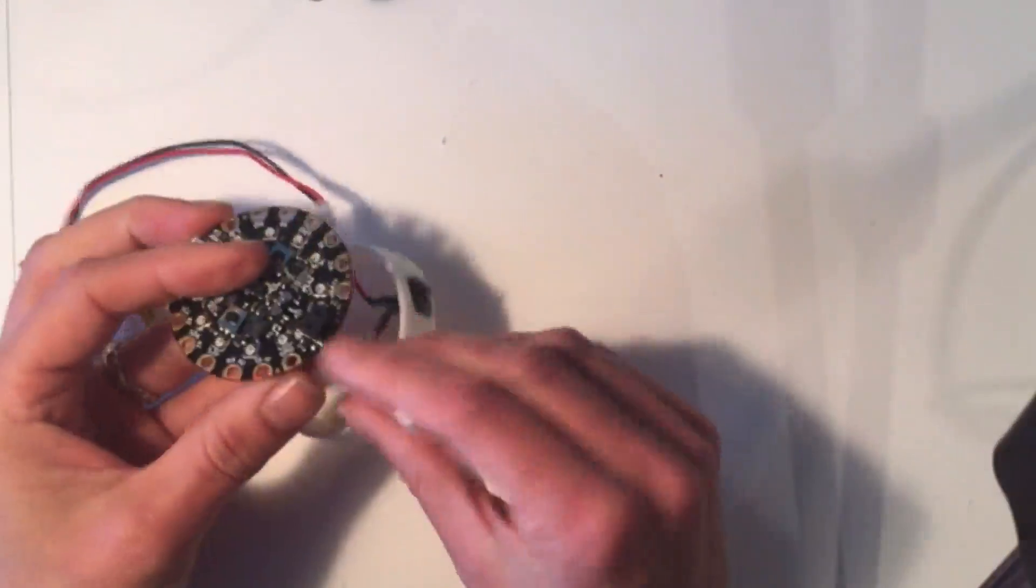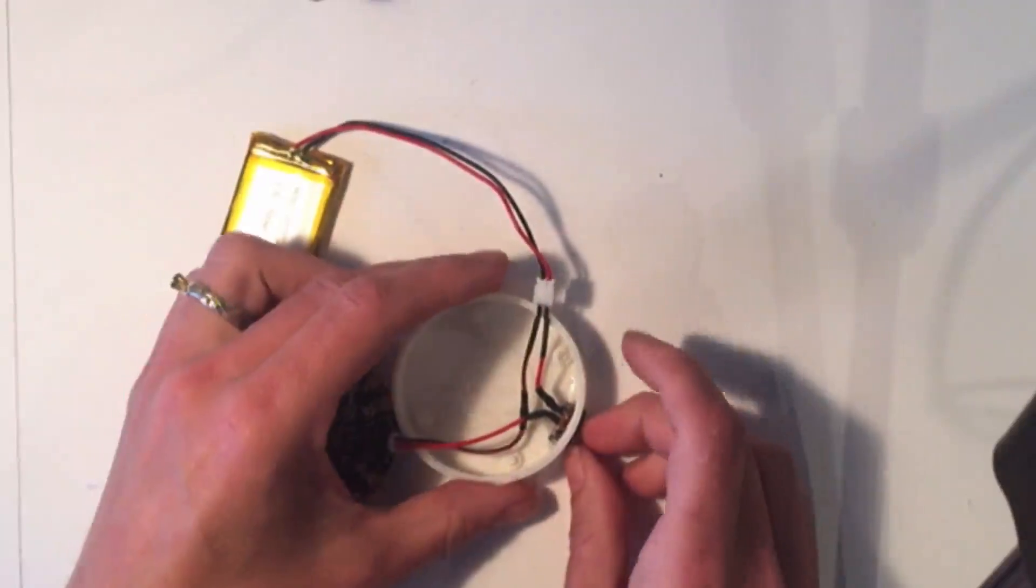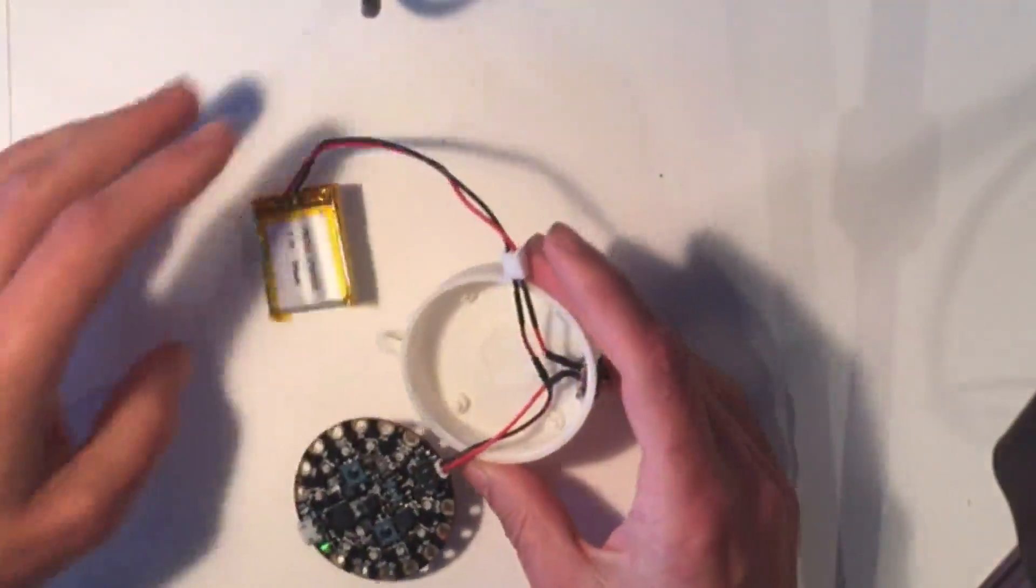After you've uploaded your code to your Circuit Playground, plug it in and make sure everything works. If it all looks good, coil everything neatly up inside the case.